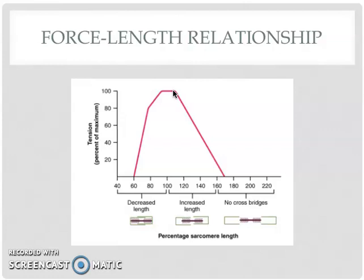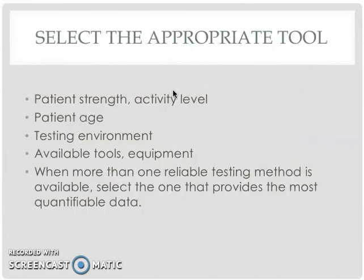When you are testing strength of a subject, you will take into consideration many factors: their strength, their activity level, their age, where the test is being conducted — whether in an outpatient clinic or on a sports field — and what equipment you have available. When you have more than one option available, you want to choose the option that is the most objective and provides quantifiable data.